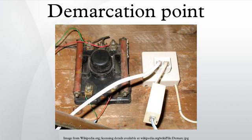A demarcation point extension, or demarc extension, is the transmission path originating from the interface of the access provider's side of a demarcation point within a premise and ending at the termination point prior to the interface of the edge customer premises equipment. This may include in-segment equipment, media converters, and patch cords as required to complete the circuit's transmission path to the edge CPE. A demarc extension may also be referred to as inside wiring, extended demarc, circuit extension, or CPE cabling.